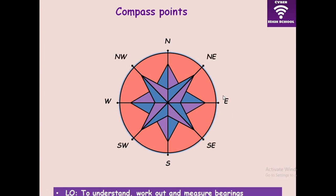Between the north and the east we have the northeast — please note I said northeast, not east north. We also have the southeast, then southwest and northwest. When the direction is north, that is 000 degrees. Remember, always represent it in three digits. At east we have 090 degrees, south is 180 degrees, and west is 270 degrees. When you complete the revolution that gives you 360 degrees.